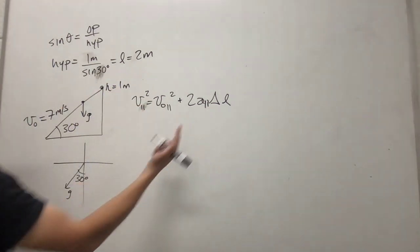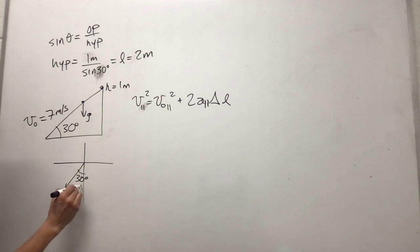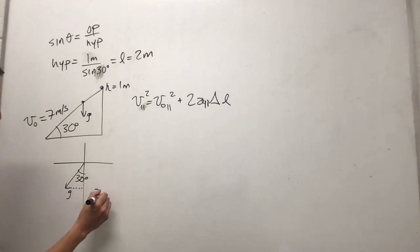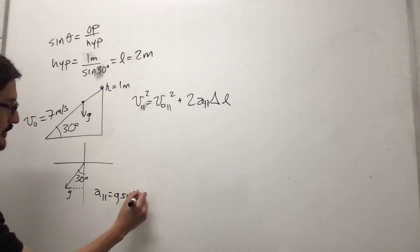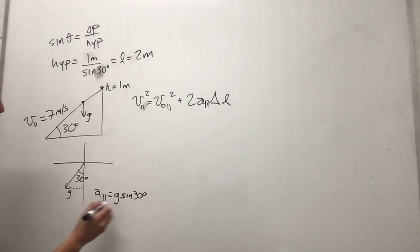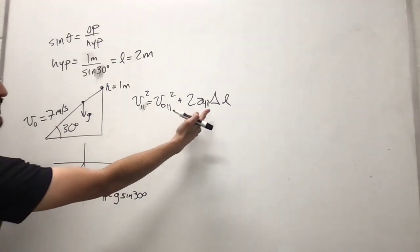And acceleration parallel is going to be, this angle is 30 degrees. And we want the component in this direction. So that is acceleration parallel to the plane is g times sine of 30 degrees. And that's it.